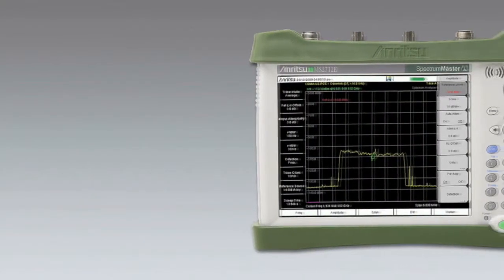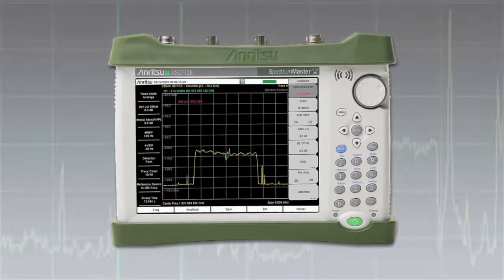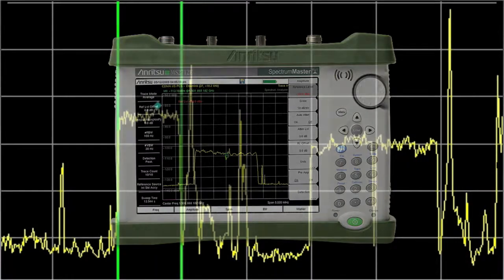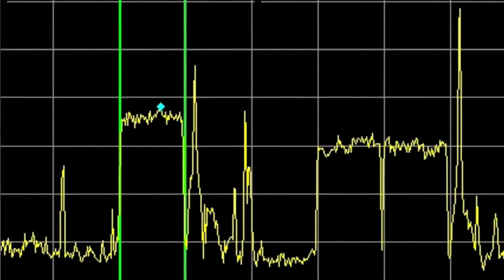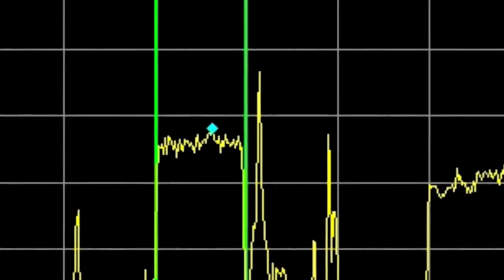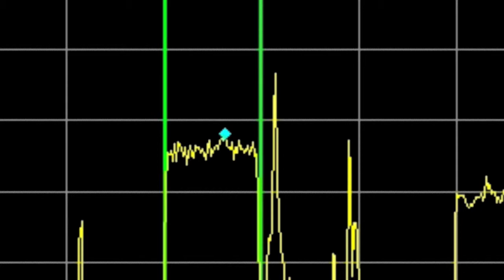Where the ISDB-T system has been chosen as the digital terrestrial television technology, spectrum mask measurements on transmitters are particularly demanding for spectrum analyzers. During the analog to digital transition phase, ISDB-T channels have to coexist adjacent to analog transmissions without causing any interference.